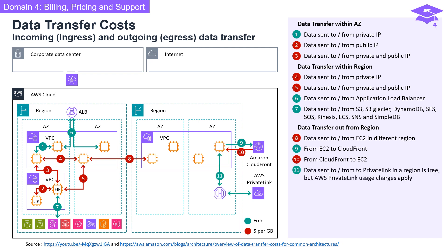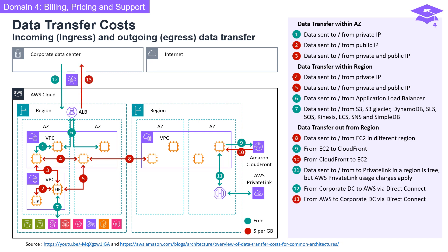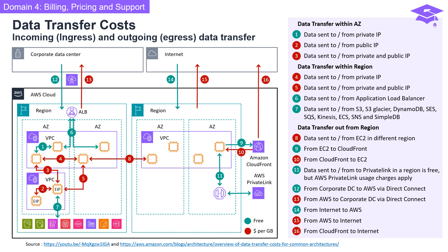Data sent to or from PrivateLink in a region is free, but AWS PrivateLink usage charges apply. There is no charge for data sent from a corporate data center to AWS via Direct Connect; however, data sent from AWS to a corporate data center via Direct Connect will be charged. Data transfer from the internet to AWS is free, but data transfer from AWS to the internet is charged. Data transfer from CloudFront to the internet is also charged.